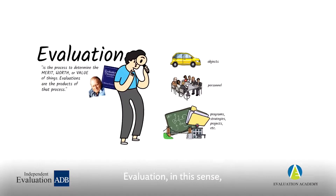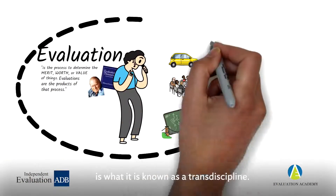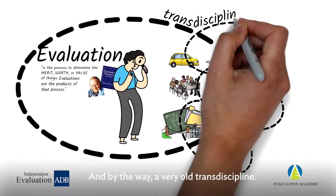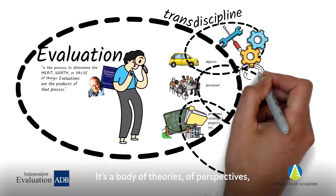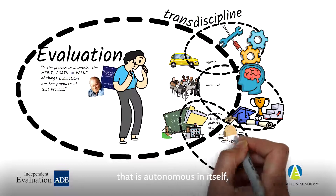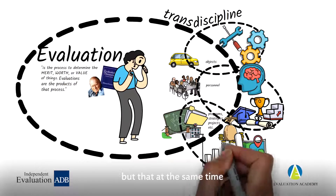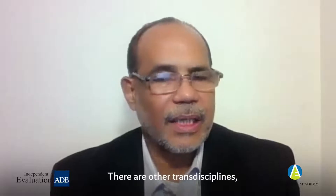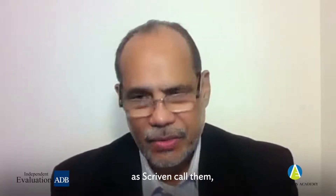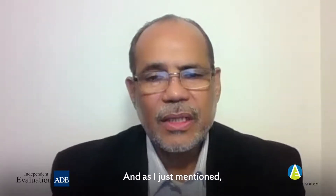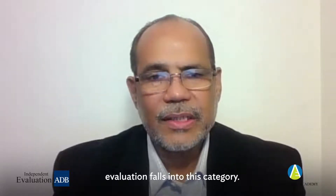Evaluation in this sense is what is known as a transdiscipline — and by the way, a very old transdiscipline. It is a body of theories, of perspectives, of views, of approaches that is autonomous in itself, but that at the same time serves the needs of other disciplines. There are other transdisciplines, as Scriven called them, such as ethics, logics, communication, and statistics. And as I just mentioned, evaluation falls into this category.